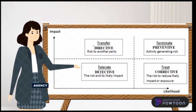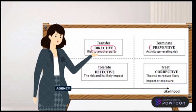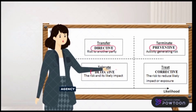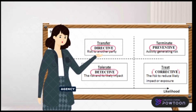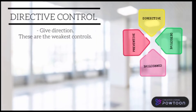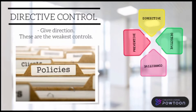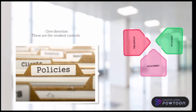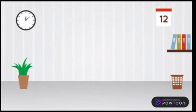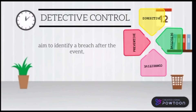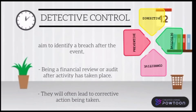Now let's proceed to Directive, Preventive, Detective, and Corrective. Directive control gives direction — things like policies are examples of directive control. Detective control aims to identify a breach after the event. An example would be a financial review or audit after activity has taken place. They will often lead to corrective action being taken.